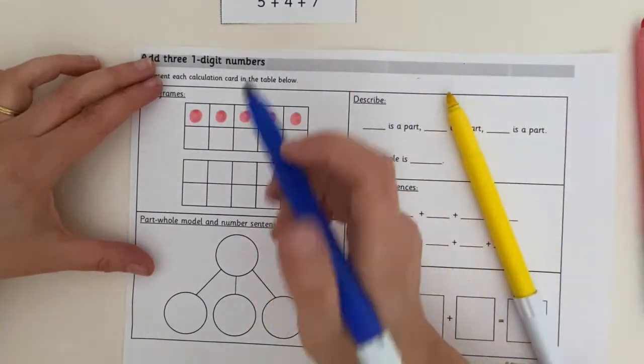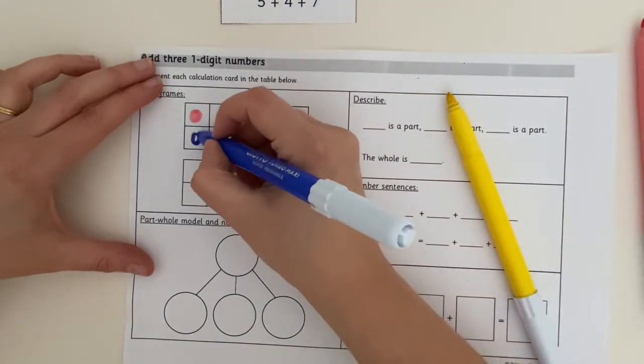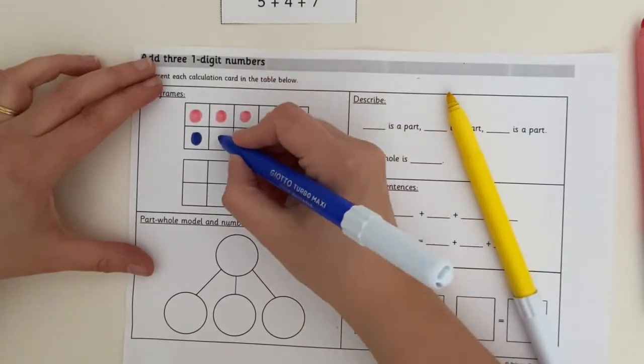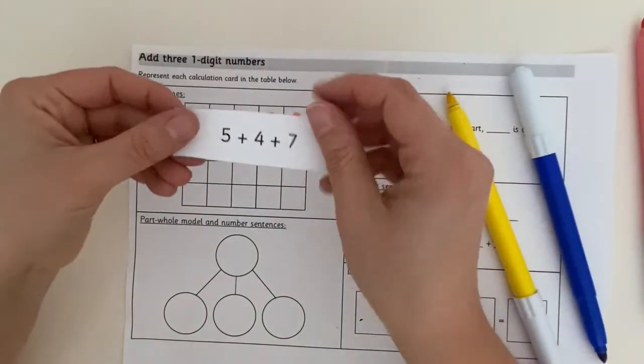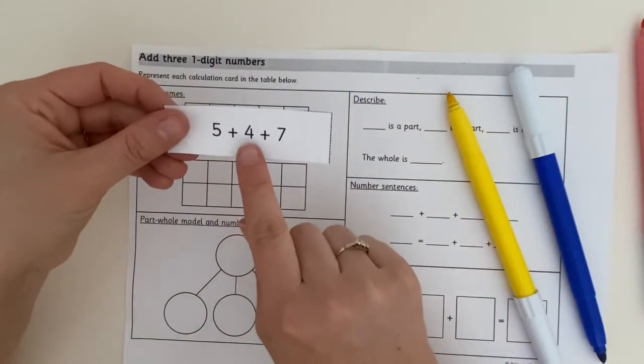Now blue, I'm going to do the four. One, two, three, four. Okay, I've done my five and I've done my four.